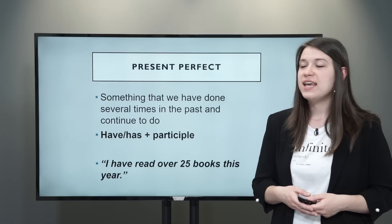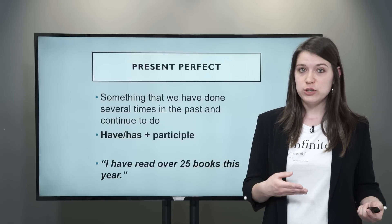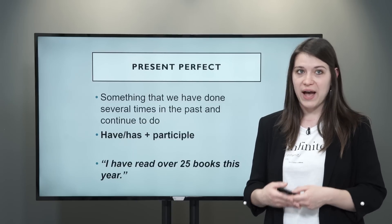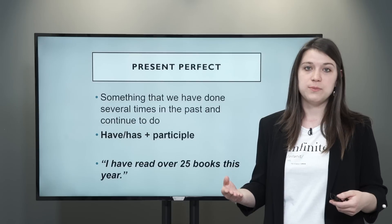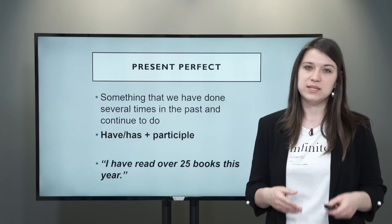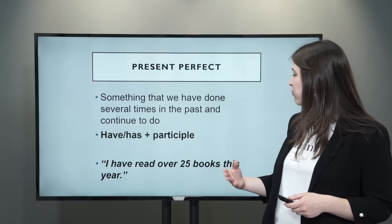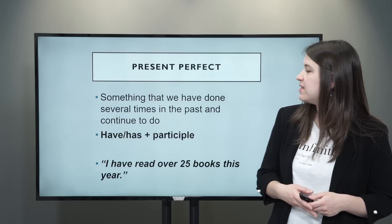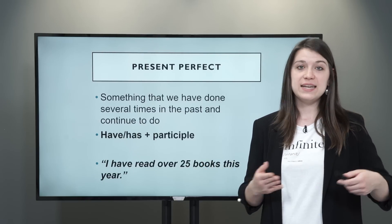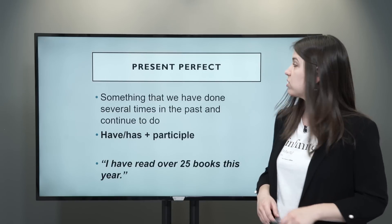The present perfect is used to talk about something we have done several times in the past and continue to do in the present. We form the present perfect with the verb to have in the present — so depending on the subject, it will be either have or has — plus the participle. For example: I have read over 25 books this year. This is something that started in the past and is still true today, because you could continue reading more books.